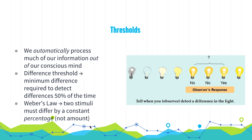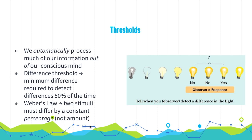The other threshold to know about is the difference threshold — the minimum difference required to detect differences half the time. This leads to Weber's law, which states that two stimuli must differ by a constant percentage in order to be noticed. For example, you probably wouldn't feel a difference between a 296-pound weight and a 300-pound weight, but you would feel a difference between a four-pound weight and an eight-pound weight. The percentage difference is what matters, not the absolute amount.